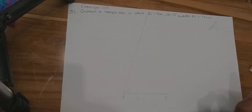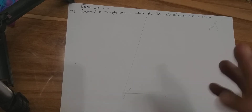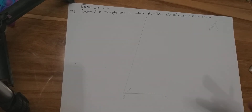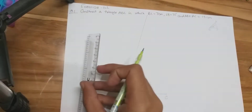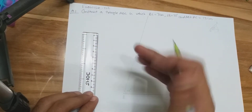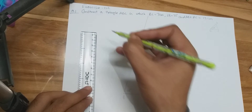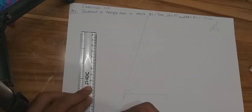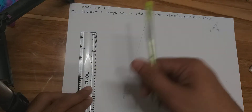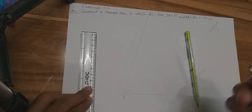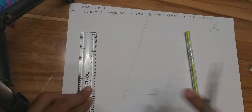The question says that the sum of AB and AC is 13 centimeters. Since the individual lengths of AB and AC are not given separately, we take a measurement of 13 centimeters and mark two points representing this distance of 13 centimeters.